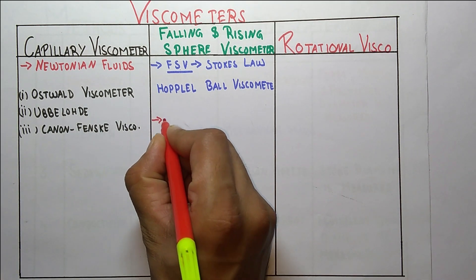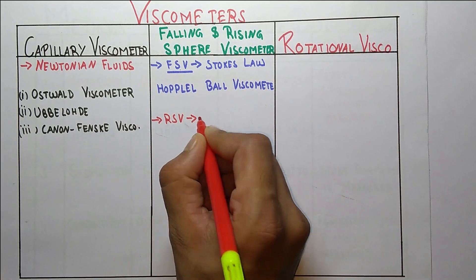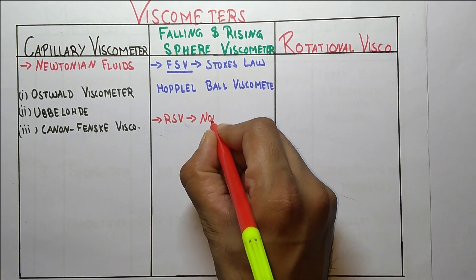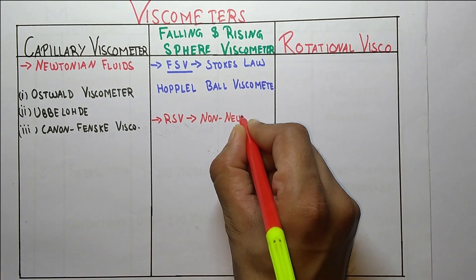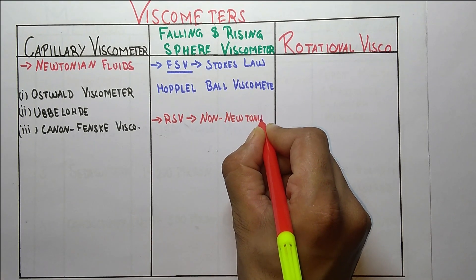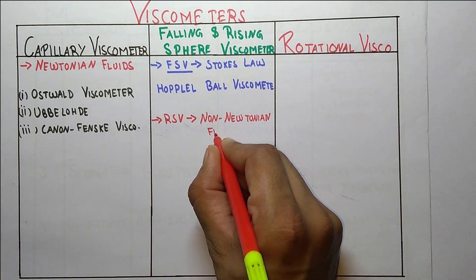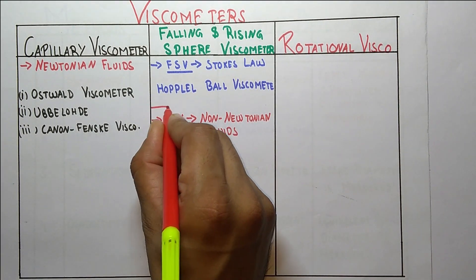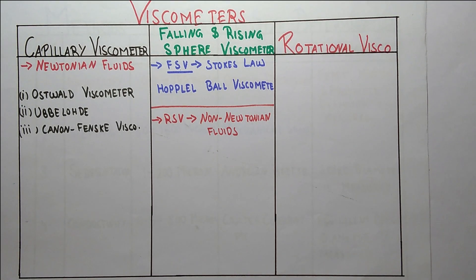The rising sphere viscometer is used for non-Newtonian fluids.